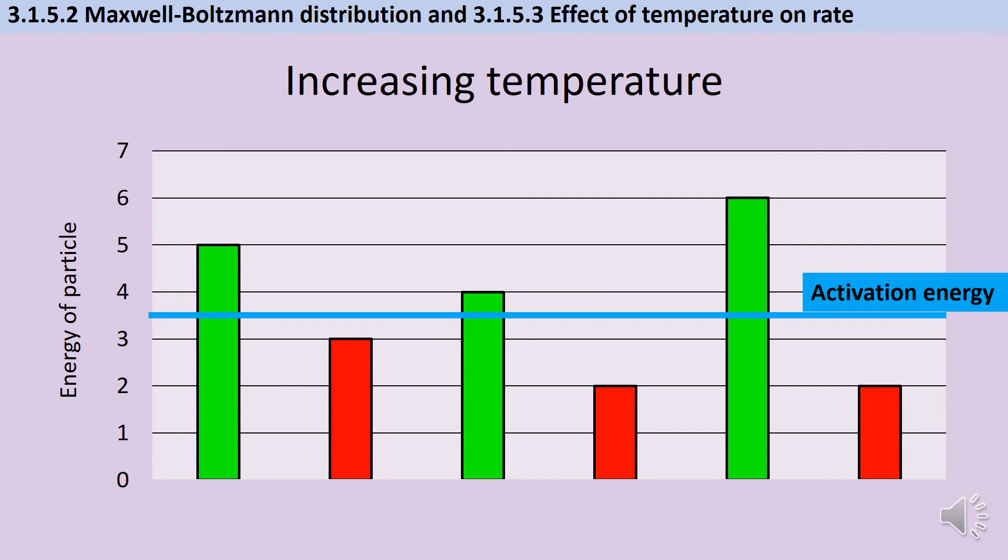If I heat this reaction then all of the particles gain more energy. The three particles that could already successfully collide still can but now there's a fourth particle that suddenly has more energy than the activation energy and it is also able to successfully collide. So now four of my particles can react rather than just three.